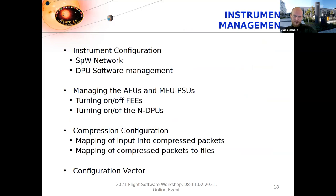Returning to the instrument management functions of the ICU: it has to manage the SpaceWire network and DPU software, meaning it boots the DPUs and manages DPU software images stored in the ICU's non-volatile memory. It also manages the engineering electronic units and main electronic unit power supply units — turning on and off the FEEs, front-end electronics, and the NDPUs. It manages compression configuration, the mapping of inputs into compressed packets, and the mapping of compressed packets into files in the spacecraft mass memory unit. Lastly, it also manages the configuration vector used to store the current configuration of the instrument.